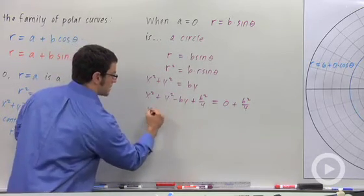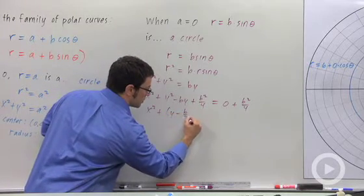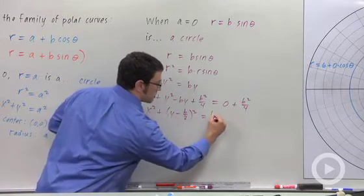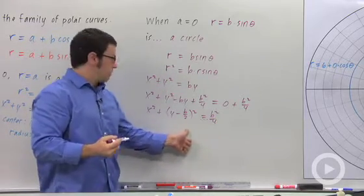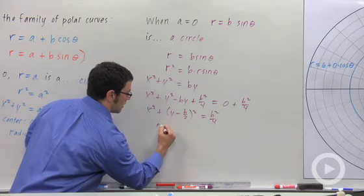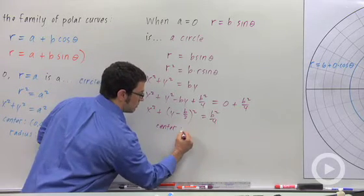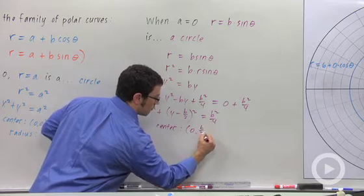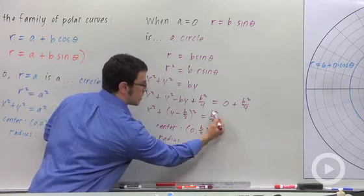And then you get x squared plus, and this factors as y minus b over 2 quantity squared equals b squared over 4. And so you can see that this is also a circle centered at 0, b over 2, and its radius is also b over 2.